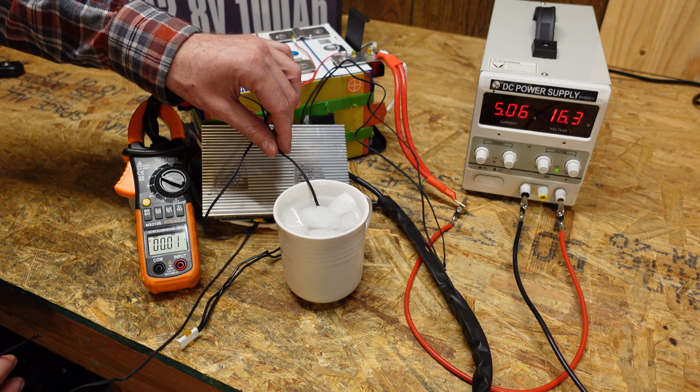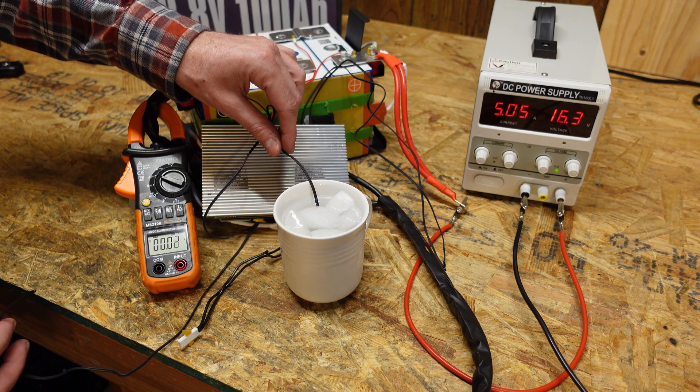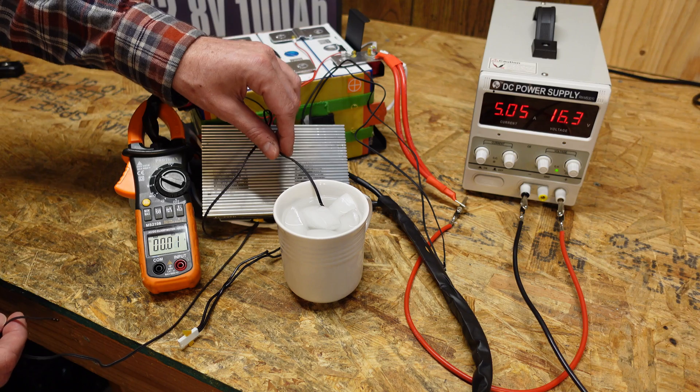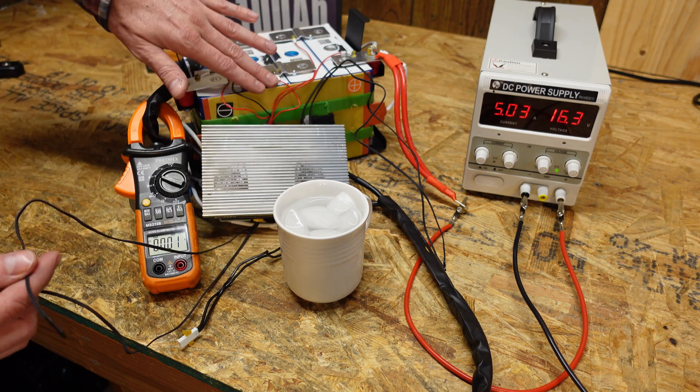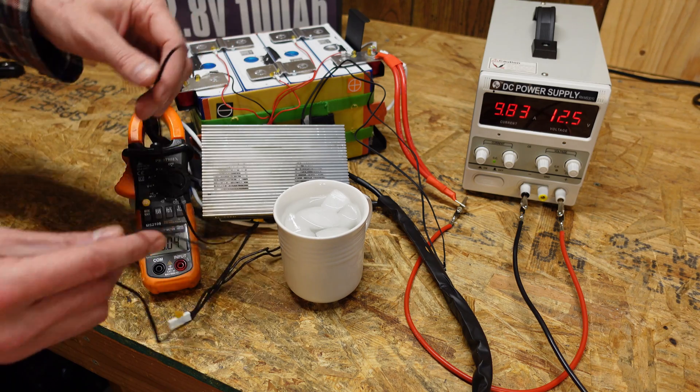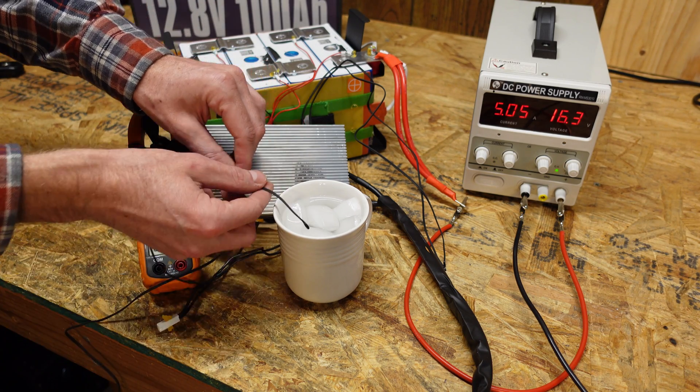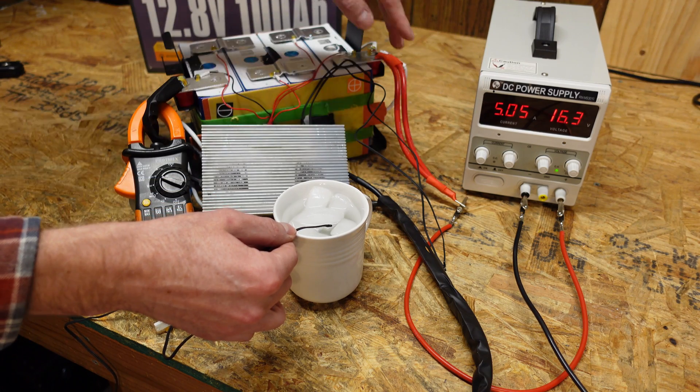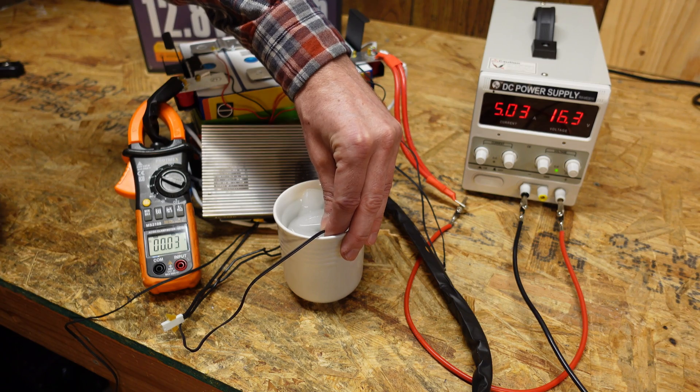So I'm going to dip the first sensor in some ice water. So we see within three or four seconds the power supply drops to 5 amps and the clamp meter drops to zero. So the low temperature charge protection has engaged and prevented this battery from charging and it's also turned on the side heaters. If I take the other sensor it does the same exact thing here. So we're back to the power supplies dropped to 5 amps that's powering the heaters and the clamp meter is showing zero amps.